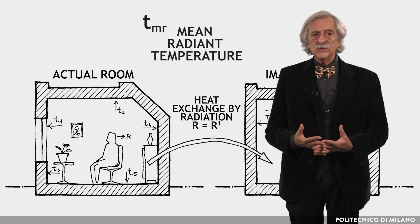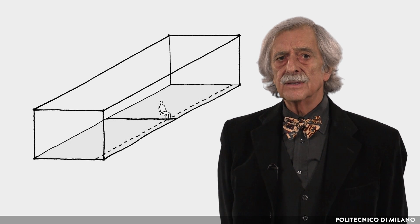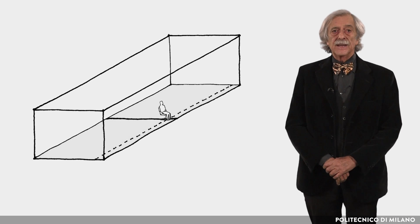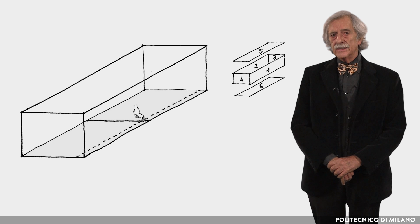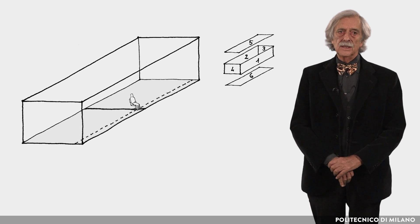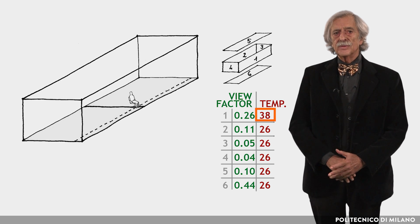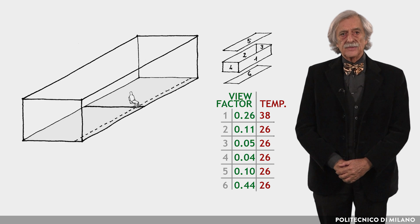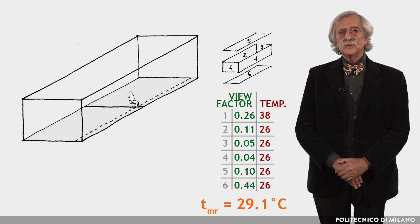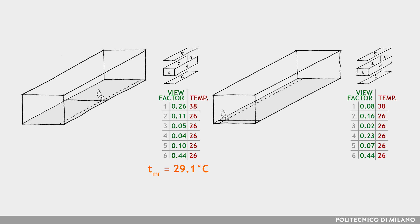It is important to note that the mean radiant temperature is a function of the position at which it is measured. This is a particularly critical aspect in rooms with large glazed surfaces. Consider a room, as shown in the figure, in which three walls are opaque and one is glazed (surface number one). Suppose the glazing temperature, due to outside temperature and solar radiation absorbed, is 38°C and all other surfaces are at 26°C. If the person is close to the glazed surface, the mean radiant temperature at that position is 29.1°C. If instead the person is in a corner far from the glazed surface, the mean radiant temperature is lower: 26.9°C.